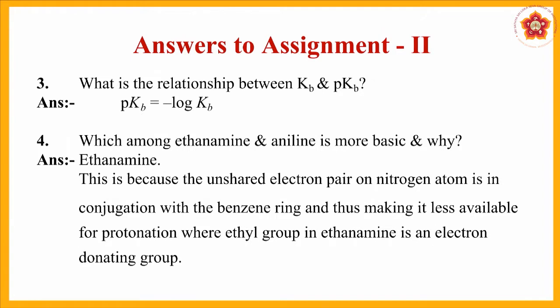The third question: what is the relationship between Kb and pKb? Kb is nothing but the dissociation constant of a base, whereas pKb is the power of dissociation of that particular base. The relationship is: pKb = −log Kb, that is, it is the negative logarithm of the dissociation constant of a base.